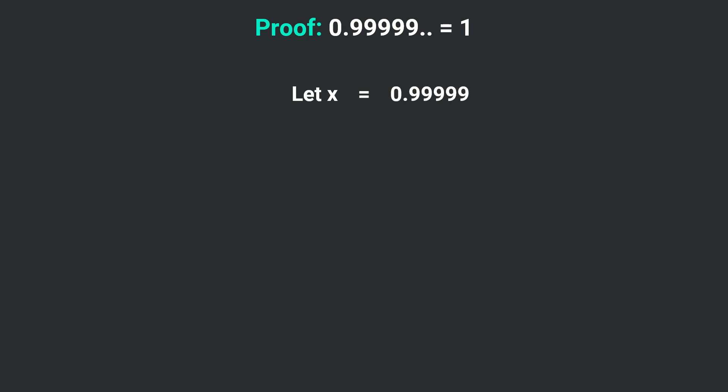Now you have to remember that this 0.99999 is not terminating after four or five digits. It is a recurring, non-terminating decimal. That means the 999 will keep repeating infinitely. So let's consider this as our first equation: x equals 0.99999.